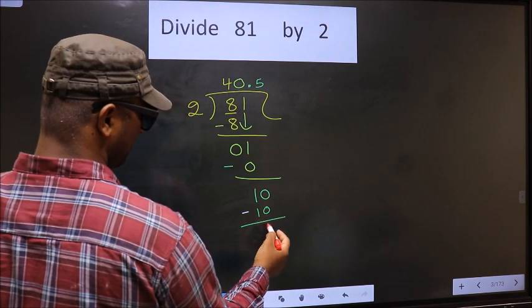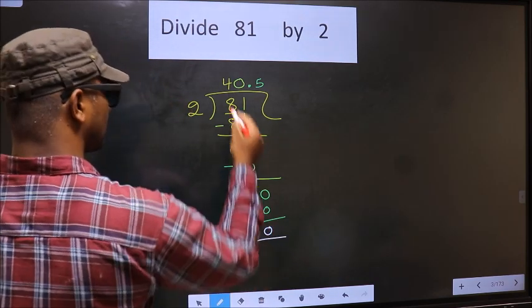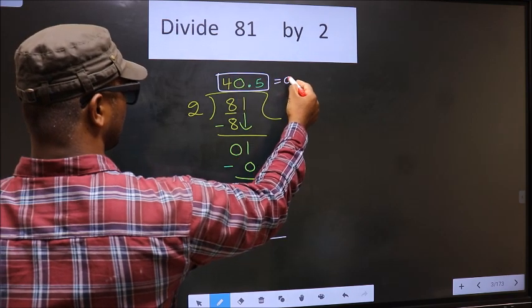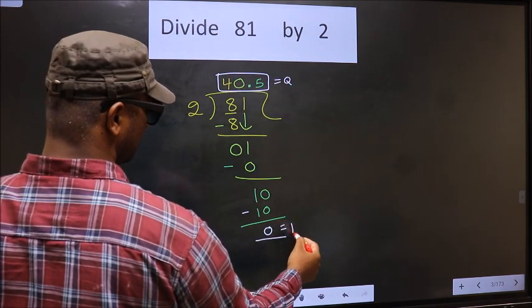Now you subtract. 10-10, 0. So this is our quotient, and this is our remainder.